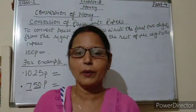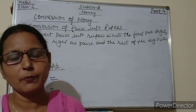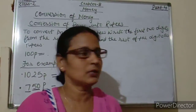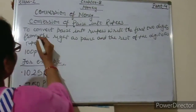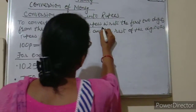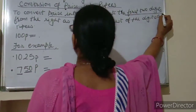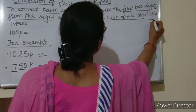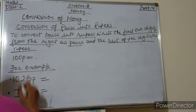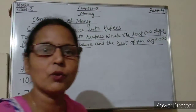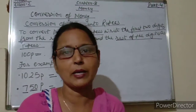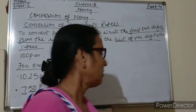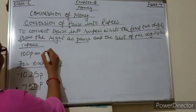Now just tell me, how many rupees do 400 paise make? Yes, 400 paise make 4 rupees. To convert paise into rupees, write the first two digits from the right as paise and the rest of the digits as rupees. So 100 paise is equal to 1 rupee.